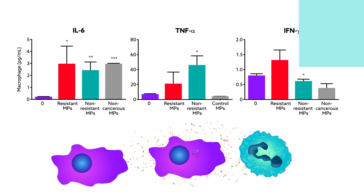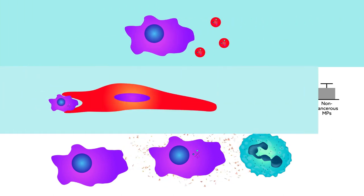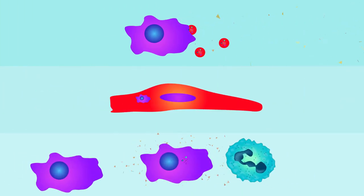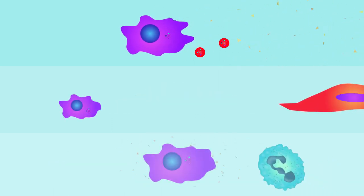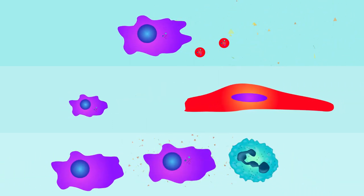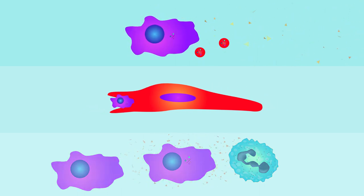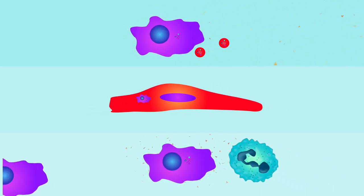This directed progression of macrophage shutdown, destruction, and subsequent immune cell recruitment shows just how sophisticated cancer cells can become in finding ways to establish a foothold in the body. Fighting cancer will require researchers to become equally adept in devising new weapons for battle.